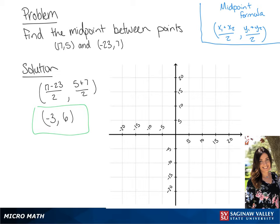Now we're going to plot the line using the original points. Now we can draw our line and plot our midpoint of (-3, 6).